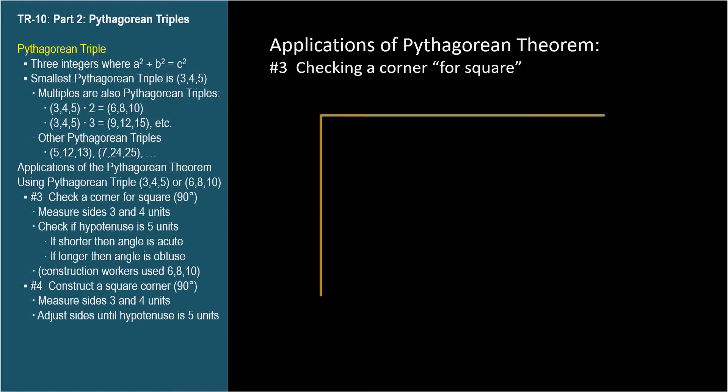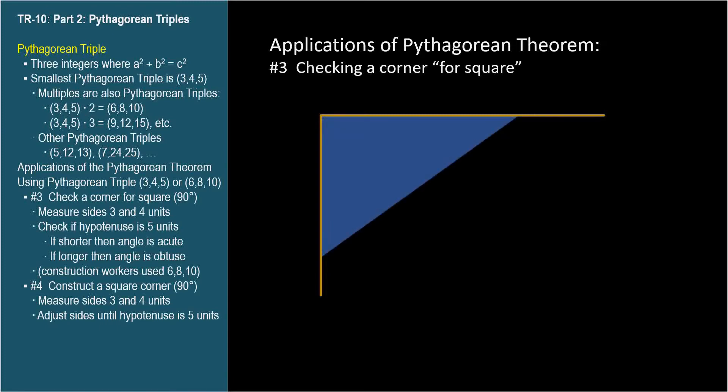Application number three of the Pythagorean theorem is checking a corner for square, which is determining whether or not an angle is 90 degrees. Here we're shown the top view of a fence, and we want to know if the corner is 90 degrees.